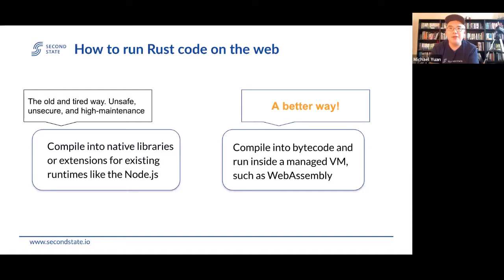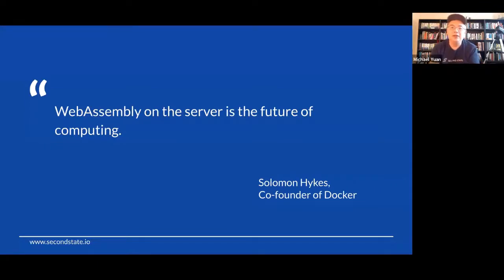A better way is to manage the bytecode — the approach that Java pioneered 20 years ago. Compile it into bytecode and run inside a managed VM, which gives a lot of benefits. Today, the leading choice of this VM is WebAssembly. Here's the co-founder of Docker, who said last year: 'WebAssembly on the server is the future of computing,' even going so far as to say that if WebAssembly and the WebAssembly System Interface had existed in 2008, they would not have invented Docker. It's a new high-level container that allows us to run bytecodes compiled from a highly efficient programming language.